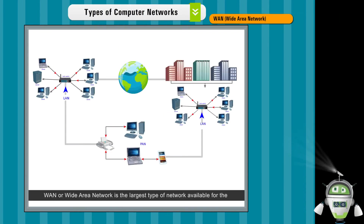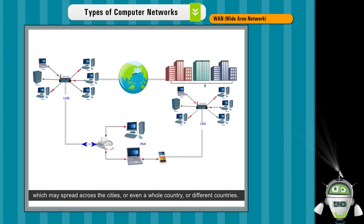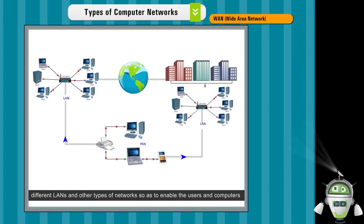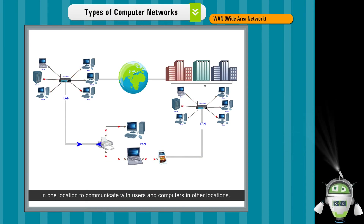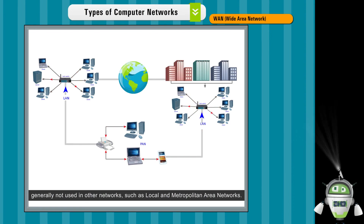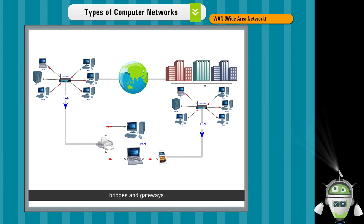WAN – Wide Area Network. WAN or Wide Area Network is the largest type of network available for computer systems. As the name suggests, this network covers a very large area which may spread across cities, or even a whole country or different countries. WANs are used to connect different LANs and other types of networks so as to enable users and computers in one location to communicate with users and computers in other locations. A wide area network contains many sophisticated and costly devices generally not used in other networks, such as local and metropolitan area networks. Examples of few of these devices are satellites, cell phones, routers, bridges, and gateways.